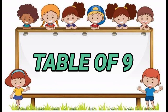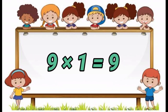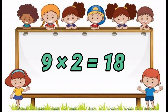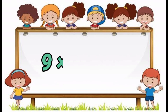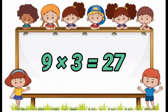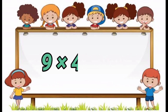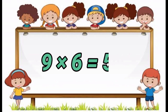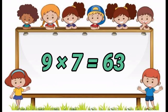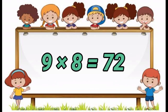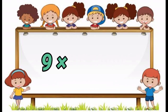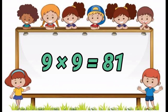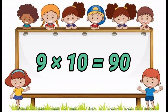Table of 9. 9 1's are 9. 9 2's are 18. 9 3's are 27. 9 4's are 36. 9 5's are 45. 9 6's are 54. 9 7's are 63. 9 8's are 72. 9 9's are 81. 9 10's are 90.